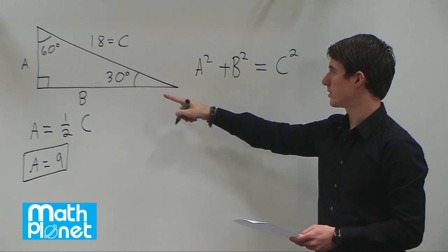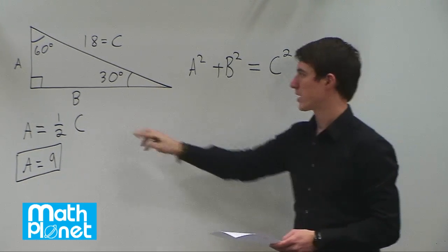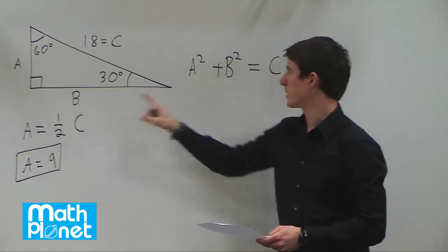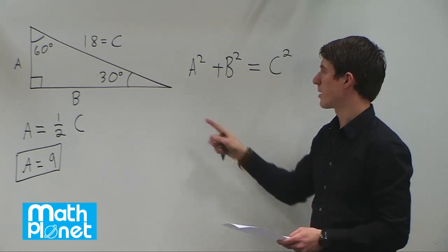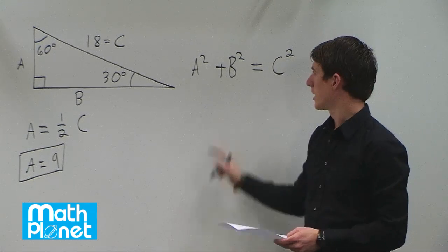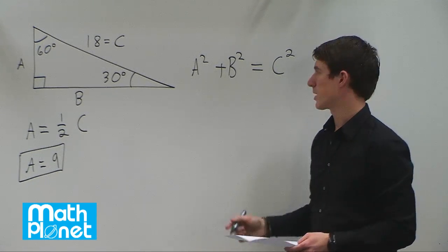So we plug in what we need to, and then we solve for what we're trying to find. So we're trying to find B, we can plug in A and C. Let's rearrange symbolically first and then plug in the values and see what we get. It'll be easier and that way we won't make as many mistakes.